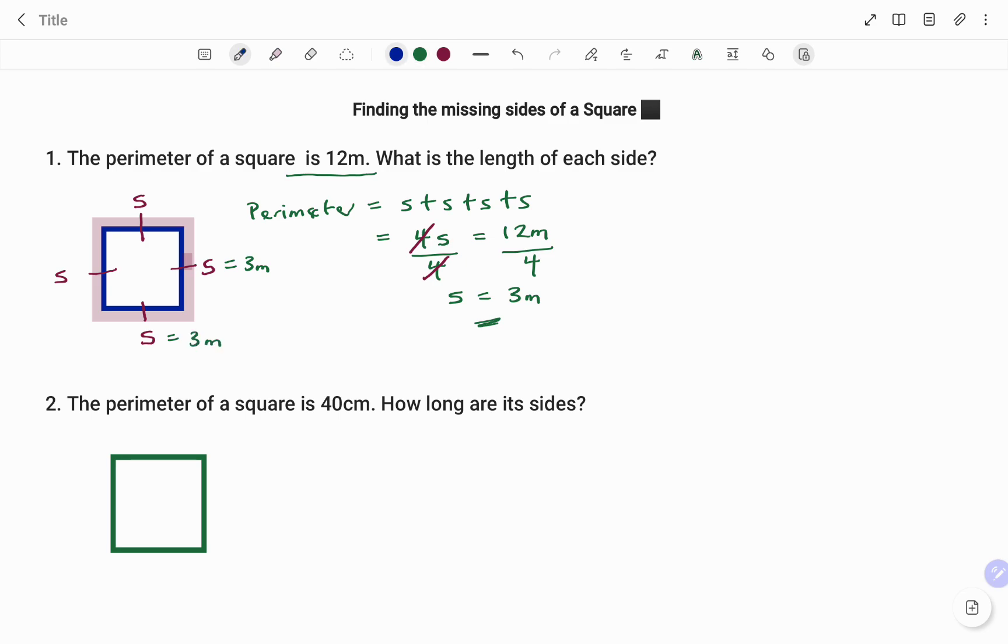In the second example, we have the perimeter of a square is 40 centimeters, as shown. How long are its sides? Like I said earlier, the properties of a square, all the sides are equal. So, for example, if I have this side to be X, this side will also be X, this side will be X, and this side will be X.